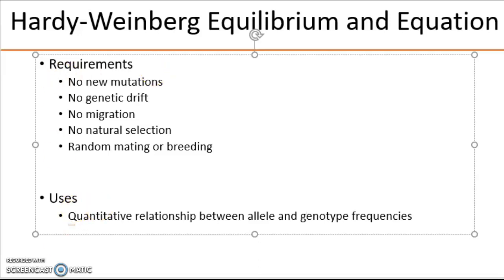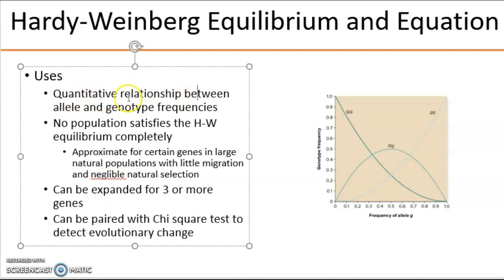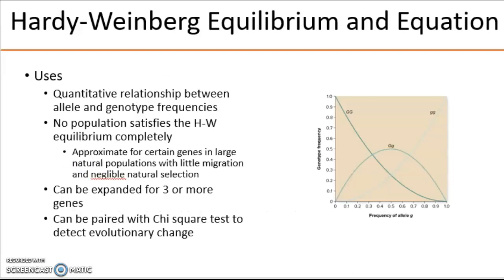Hardy-Weinberg gives us a quantitative relationship between allele and genotype frequency. But if we go back to those requirements, it's asking for a lot. It requires that mutations don't happen — but we know mutations happen spontaneously or through induction. It says no migration, but in the natural order of things, people and animals are constantly moving. And there's definitely no random mating under most circumstances — in humans we pick people based on certain traits, and animals also pick mates based on certain traits. So only very specific genes in large populations with little migration and negligible natural selection can we actually use this formula for.